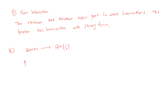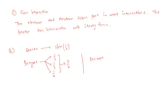Baryons are made up of three quarks. In the first case, if all three have spin plus one-half, the net spin of the baryon will be three-halves. If the baryon consists of two down quarks with spin minus one-half and one up quark, its net spin will be one-half.